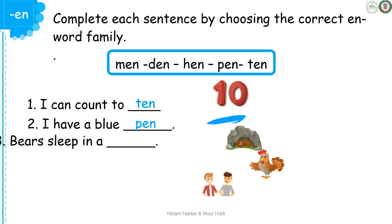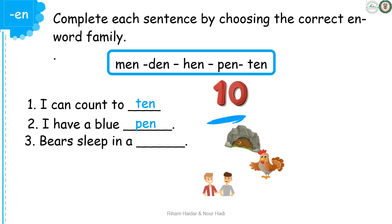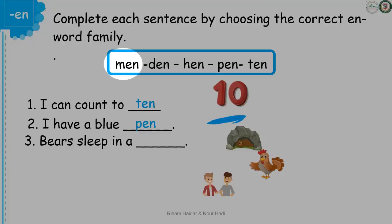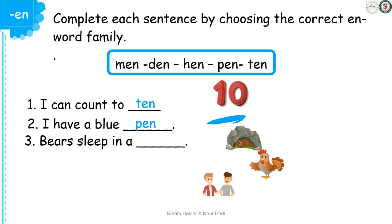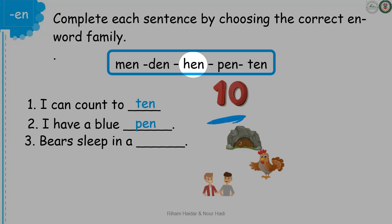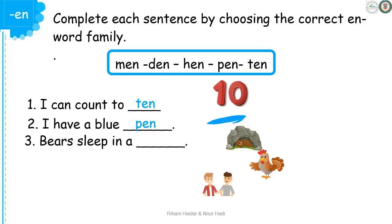Sentence number three: Birds sleep in a... Do you know what picture is it? You can choose from the key box. Is it men? Or den? Or hen? Great work! It is den. So, bears sleep in a den.